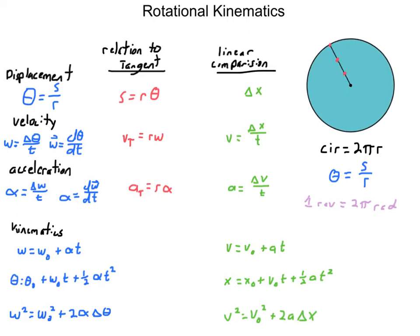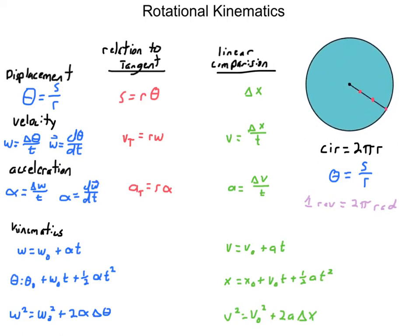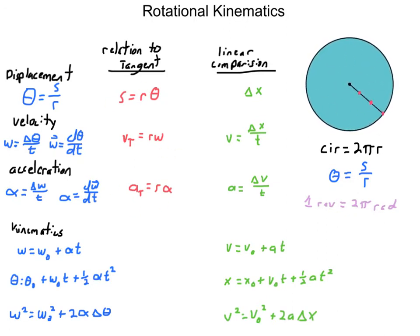Angular acceleration is the change in angular velocity divided by the time it takes to speed up or slow down - or the time derivative of an angular velocity equation, or the second derivative of an equation based on angle theta. Units here are the same as tangential: it's just no longer meters, it's radians. So radians per second for angular velocity and radians per second squared for angular acceleration.